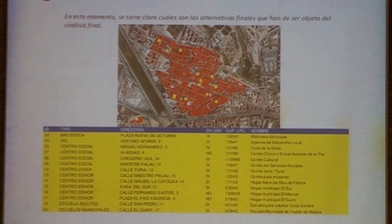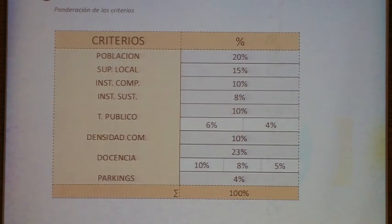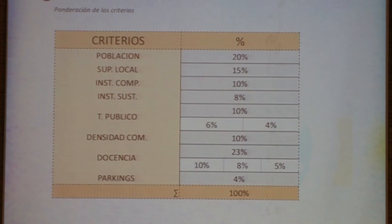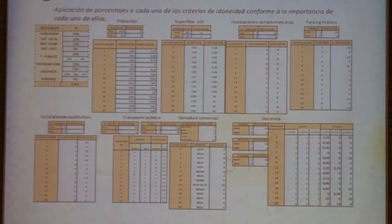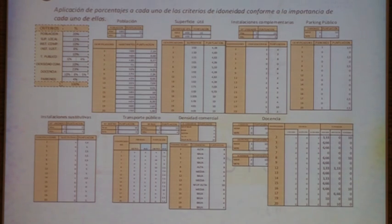Based on that, we developed the alternatives and assigned marks to the different criteria. This was done by the student with his methodology. Obviously, these criteria are subjective — it varies — but these were the criteria and the weights assigned. Each criterion was ranked; for example, a bus stop had a minimum mark of zero and a maximum of four. A location with no bus stops around would score zero, while those with more bus stops or underground stops would have a higher score. These were the marking criteria.